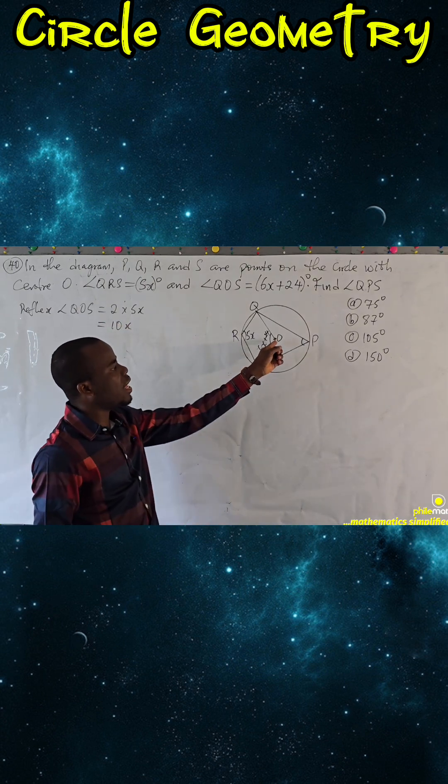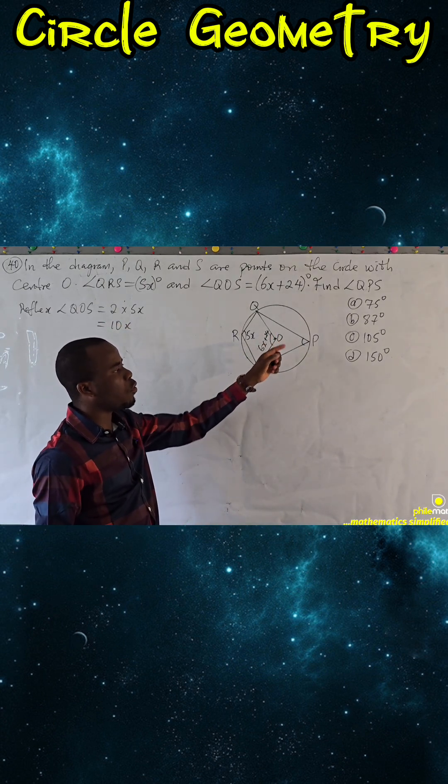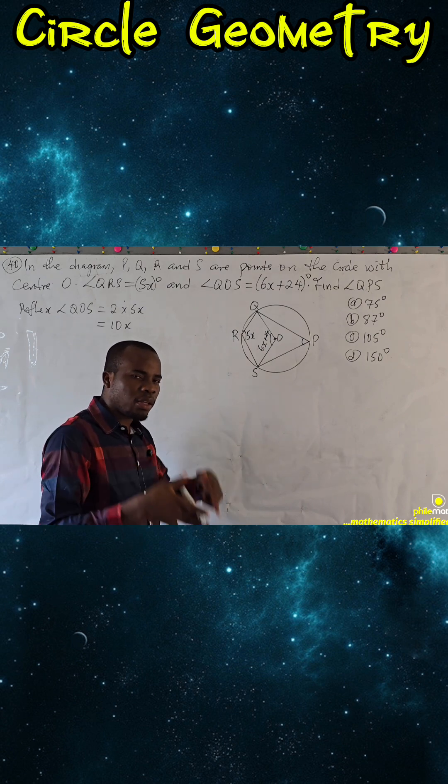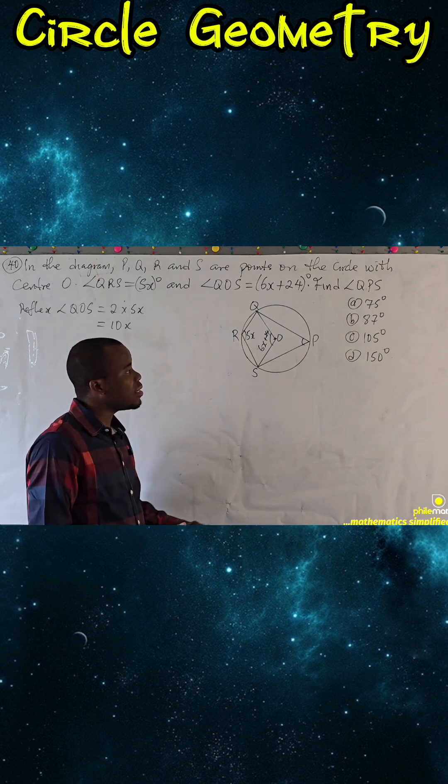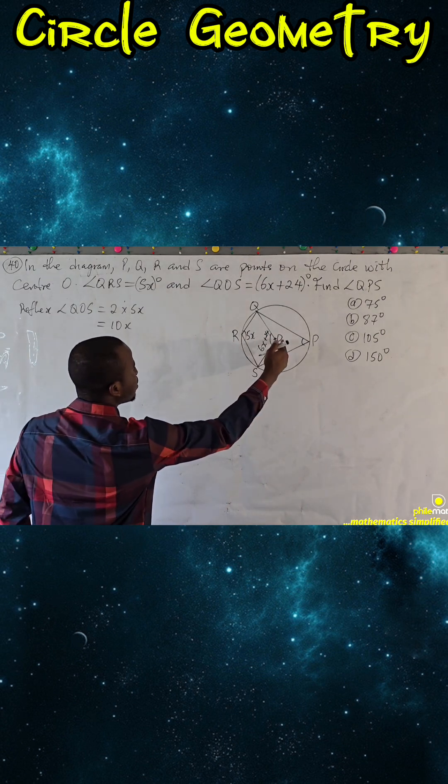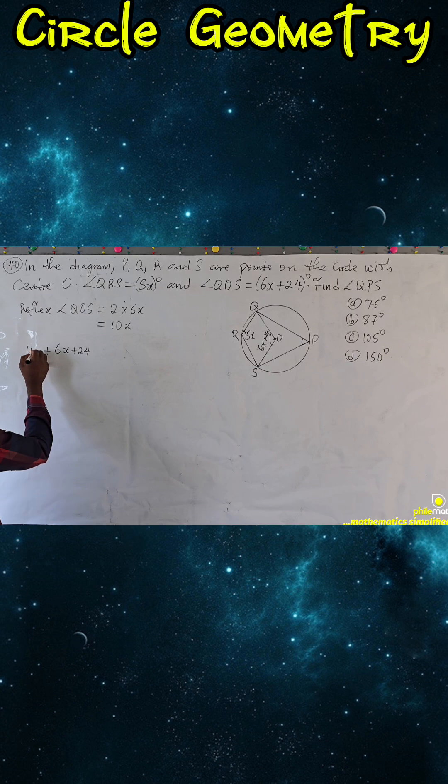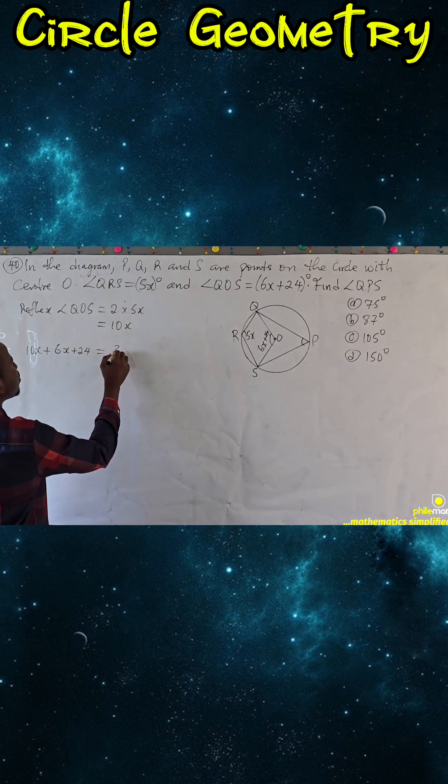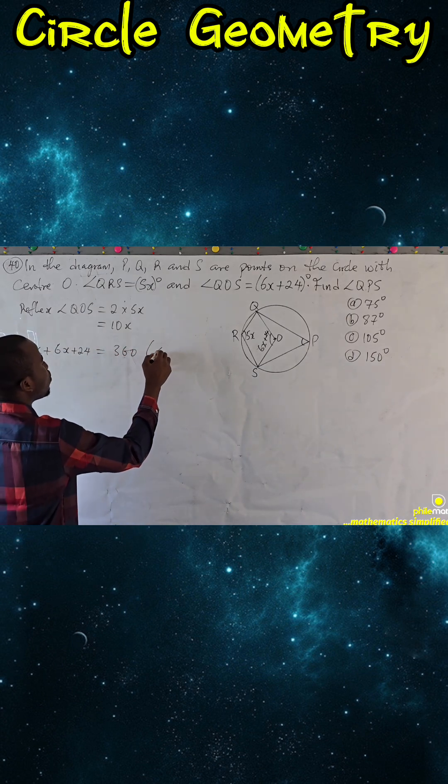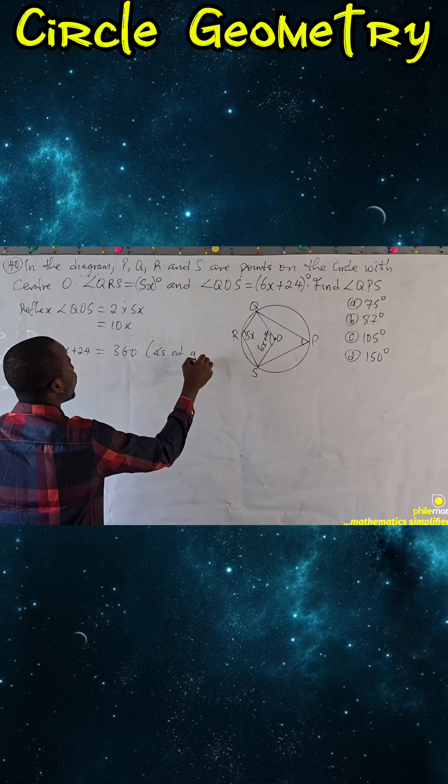And so if this is 10x and this is 6x plus 24, we know that angle at the point is 360 degrees. And so the sum of this and this should give 360. 6x plus 24 plus 10x should give 360 degrees, angle at a point.